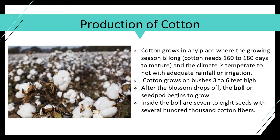Cotton needs 160 to 180 days above 70 degrees. In the United States, cotton will grow in 17 states — from southern Virginia to central California. Historically it has been the south where it has grown. The major producers are: China at about 26%, India at 25%, the US at 11%, Pakistan at 8%, and Brazil at 5%.